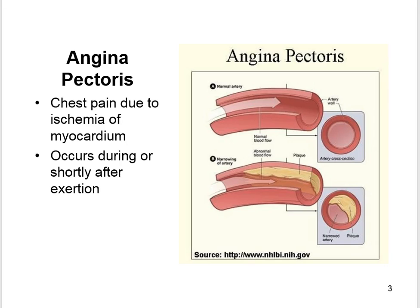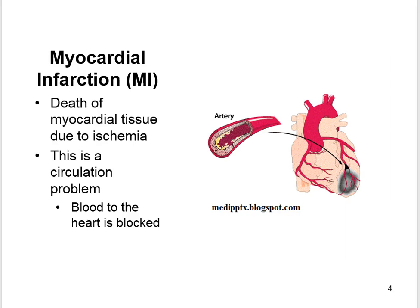Angina pectoris is chest pain due to ischemia of the myocardium; it occurs during or shortly after exertion. A myocardial infarction is the death of myocardial tissue due to ischemia. This is a circulation problem — blood to the heart is blocked.